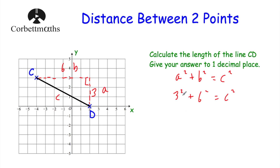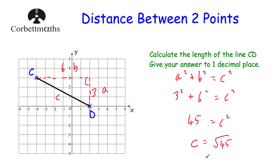Now let's work this out — it's a calculator question. You could do 3 squared as 9 and 6 squared as 36, writing 9 plus 36, or just type 3 squared plus 6 squared into your calculator and press equals — that gives you 45. So we've got 45 equals c squared. The length of this line is obviously not 45, so we square root it: c is equal to the square root of 45, which is 6.7082 and so on. We've been asked to give our answer to one decimal place, so because it's 6.70, to one decimal place that's 6.7.